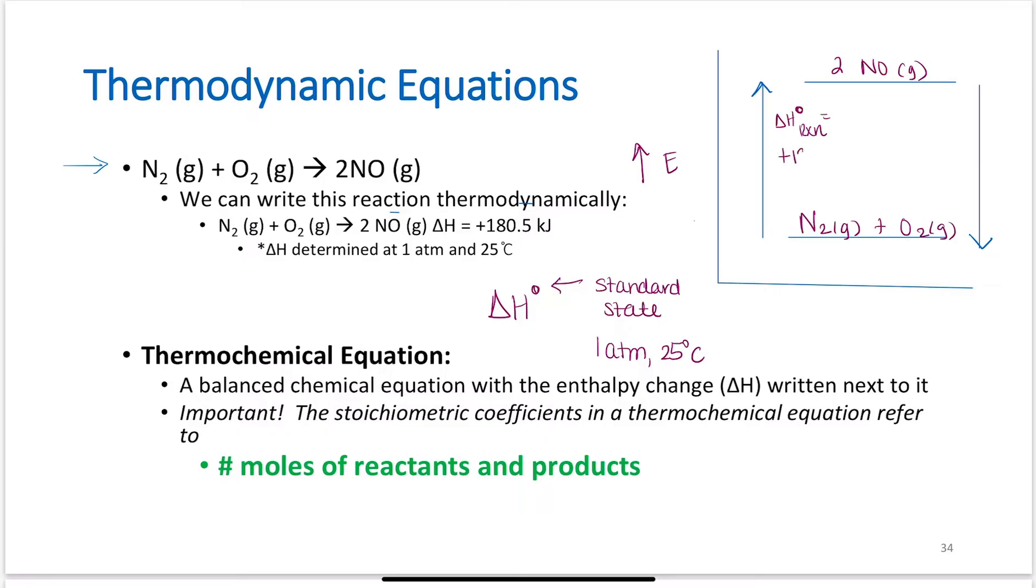This equals positive 180.5 kilojoules. So if I'm going from N2 plus O2 to 2 moles of NO, it's going to take 180.5 kilojoules to do that.